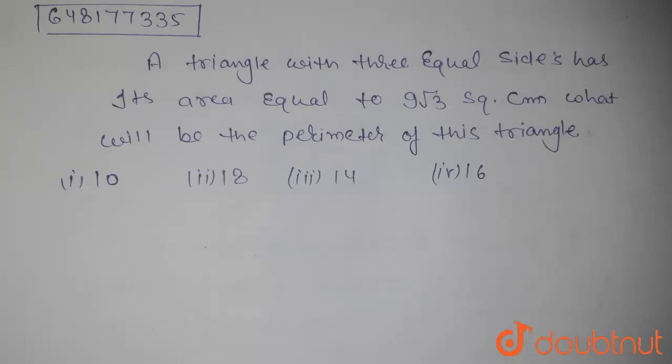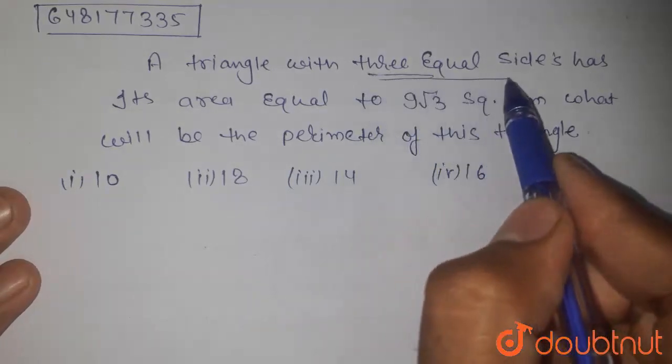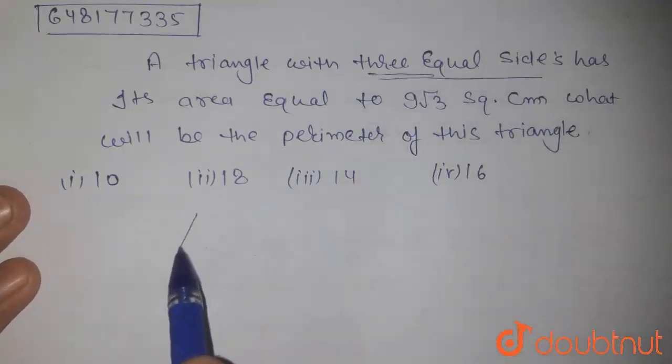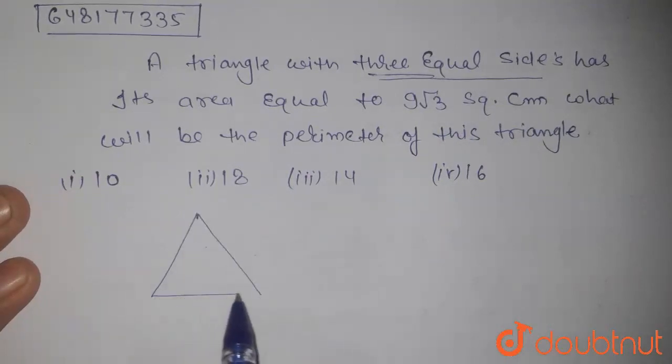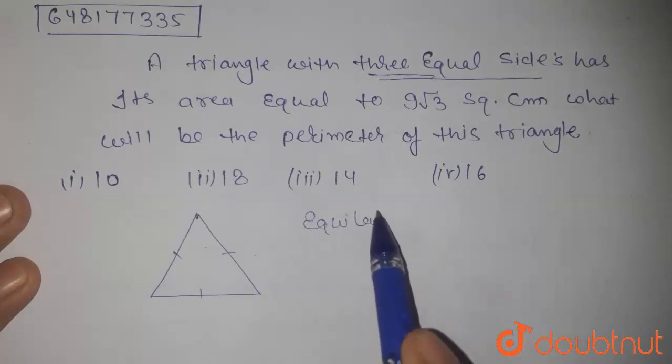First of all, what is given? A triangle is given with equal 3 sides. It means the triangle will have all sides equal. This is an equilateral triangle.